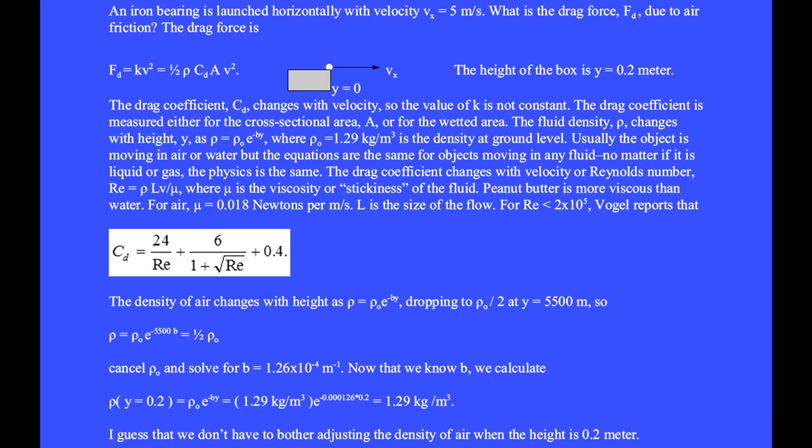The drag coefficient changes with velocity or Reynolds number Re equals rho L v over mu where mu is the viscosity or stickiness of the fluid. Peanut butter is more viscous than water. For air mu equals 0.018 newtons per meter per second. L is the size of the flow.